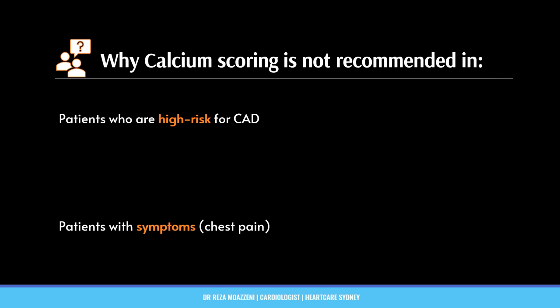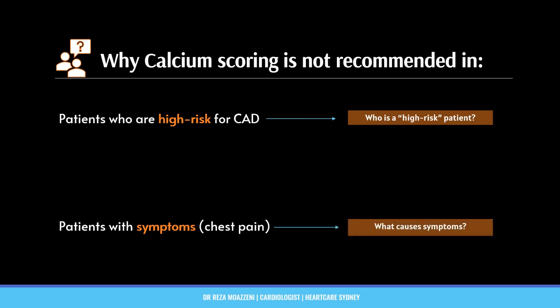I will talk about two groups in whom we don't recommend calcium scoring. First, patients who have already been classified as high risk for heart attack. And second, patients who present with symptoms such as chest pain. But in order to understand the reasoning behind these recommendations, it is crucial that we first learn how risk is calculated and how patients are categorized as high risk in the first place, and what the causes of symptoms are.